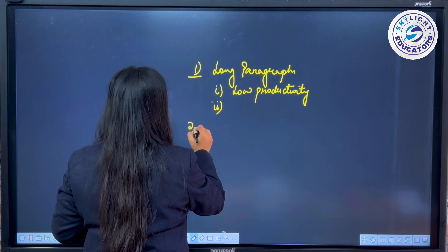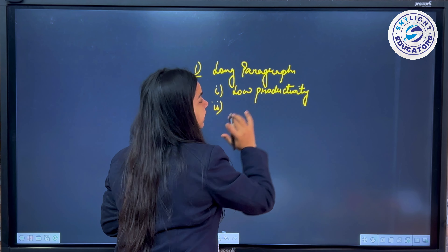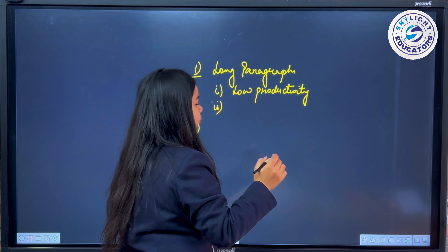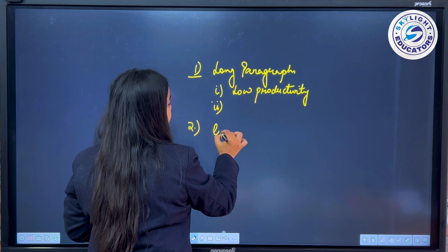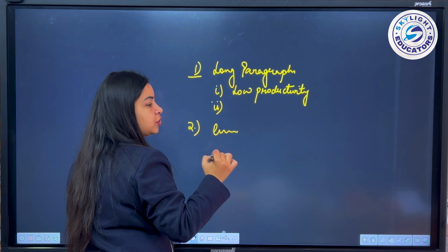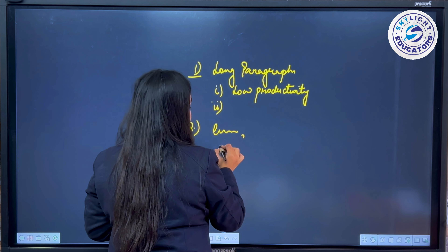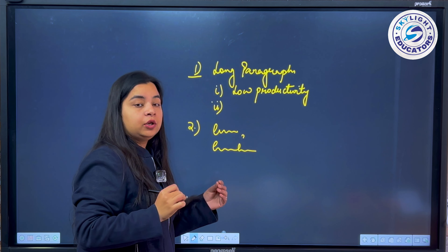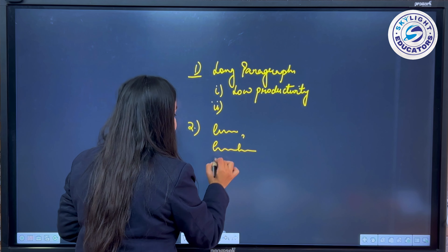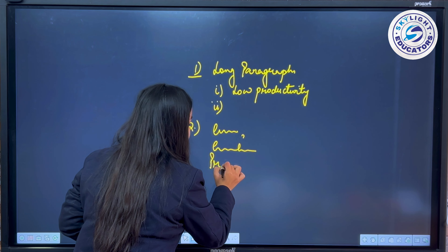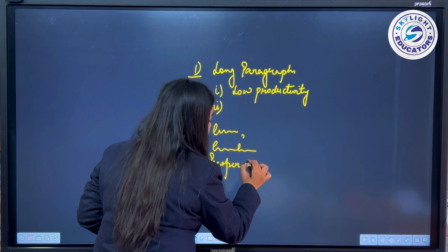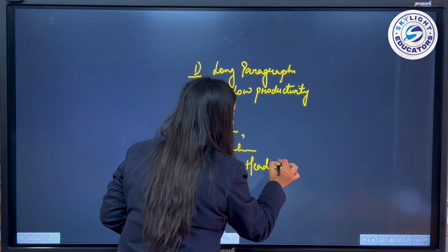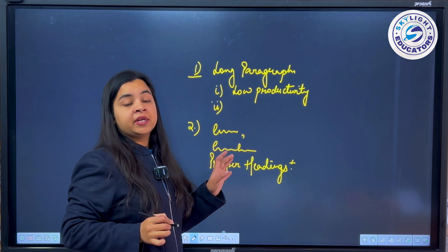Second, whatever points you write, you have to give a proper heading. So you could write 'quality of education,' or 'productivity of Indian agriculture was very low.' You have to write proper headings and proper subheadings with your answer, with suitable headings as per your explanation.